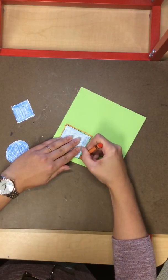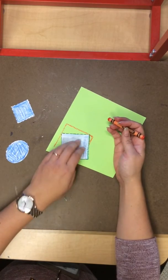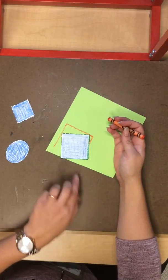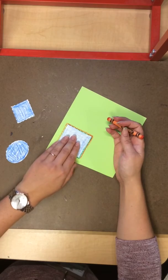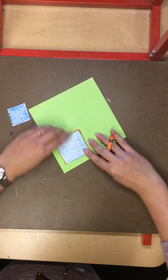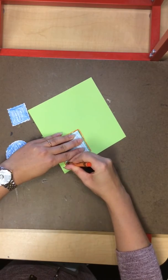Sometimes we call this outlining when we draw a line around a shape. If your shape accidentally gets moved, just slide it back into place like a puzzle piece. And then we can finish tracing or outlining it.